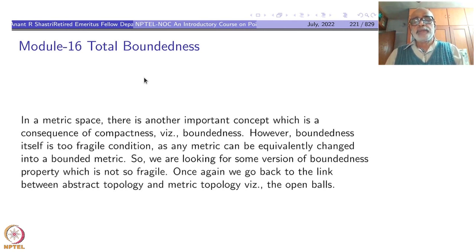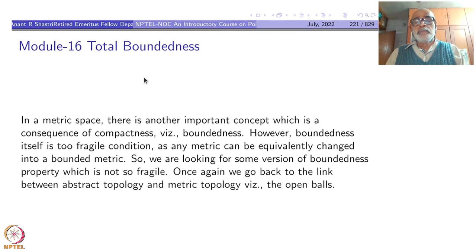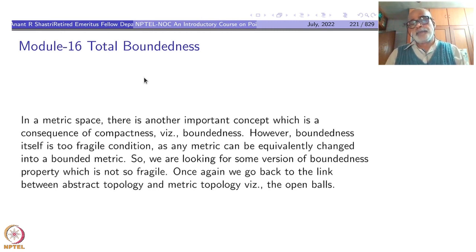In a metric space there is another important concept which is a consequence of compactness, namely boundedness. However, boundedness itself is too fragile a condition because any metric space can be equivalently changed — the metric can be changed into a bounded metric without changing the topology. So we are looking for some version of boundedness which is not so fragile. We go back to the link between abstract topology and metric spaces, namely the fundamental open subsets: open balls.